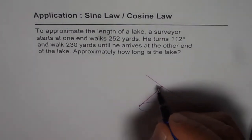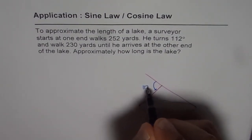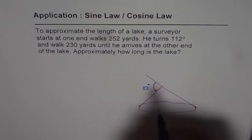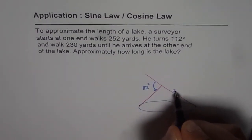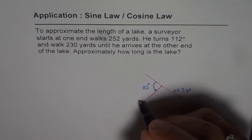Now, the 112 degree turn means he was walking in this direction and this angle is 112 degrees. That is what is given to us. The distance travelled is first 252 yards and then 230 yards.